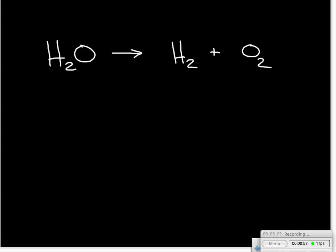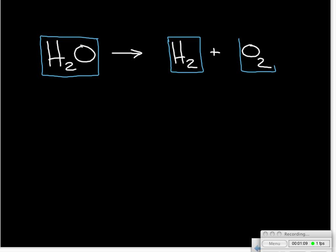As we're first learning how to balance equations, we'll do this optional step — though if you're already comfortable you don't have to. I recommend for students first learning to draw a box around each individual substance in the reaction. Notice I didn't put a box around just the H₂ or the O in the water molecule — water is one substance, so it gets its own box.